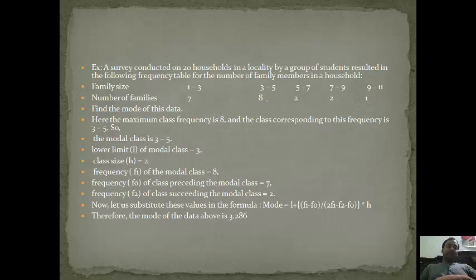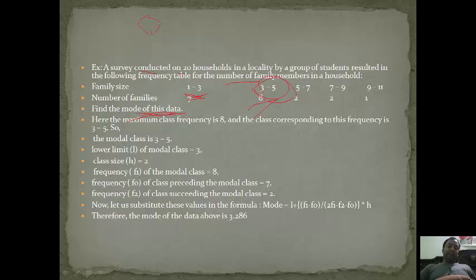Now coming to another question. Suppose a survey is conducted on 20 households in a locality by a group of students, resulting in the following frequency table for the number of family members in the household. Family size 1 to 3 - 7 families, 3 to 5 - 8 families, 5 to 7 - 2 families, 7 to 9 - 2 families, and 9 to 11 - 1 family. We have to find the mode of this data. If it is not in a series, we would simply find the maximum number of repeated data. But since it is given in this interval form, we have to calculate it differently. However, if you want to get simply the mode, we will find which series is represented more, that is 3 to 5. The family size belonging to 3 to 5 has the maximum number of families, that is 8. So the modal class will be 3 to 5.